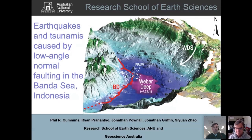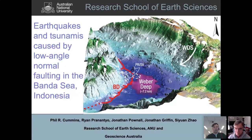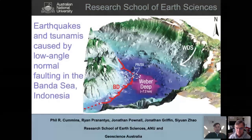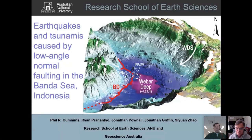Phil received his PhD in Geophysics from the University of California, Berkeley in 1988, and subsequently worked in a range of postdoctoral and research fellow roles at ANU until 1996. He then moved to the Japan Centre for Marine and Earth Science Technology, leading their geodynamics research until 2001, when he took up a position at Geoscience Australia leading earthquake and tsunami hazard research. In 2011, he accepted a joint appointment between GA and ANU as a professor of natural hazards, combining teaching, research, and technical application of science.